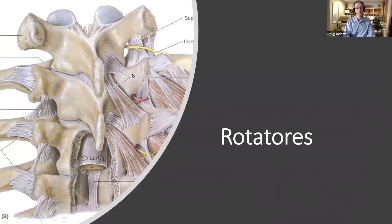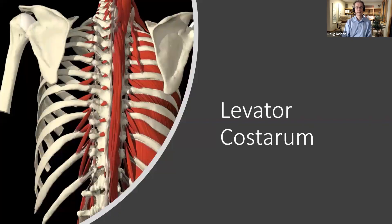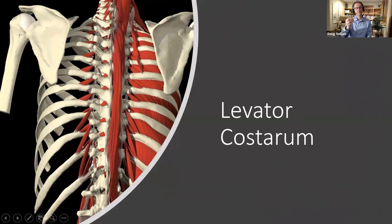Speaking of rotation, here are the rotatories — the rotatory brevis and the rotatory longus. You're going to have a very personal relationship with those muscles when we get through the thoracic range of motion section. They're remarkable. Partly what's remarkable is that the rotatories don't actually rotate the spine — we'll get to that at the seminar. And the levatores costarum — this is the brevis and this is the longus. These muscles work with very intrinsic movements of the ribs, primarily during respiration, but they are also ancillary muscles in rotation. And that's where the trouble begins.